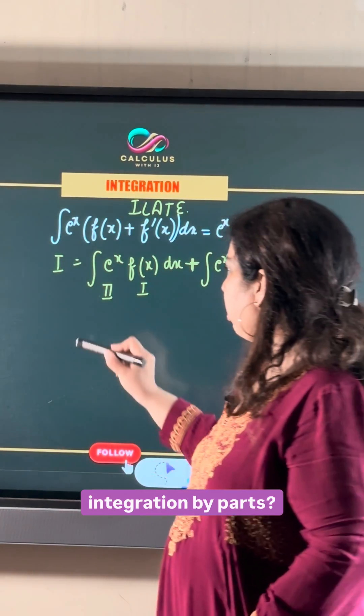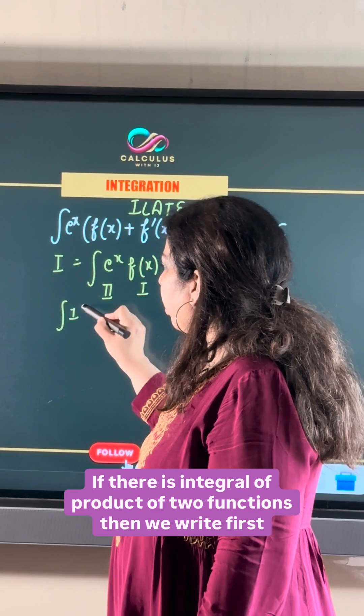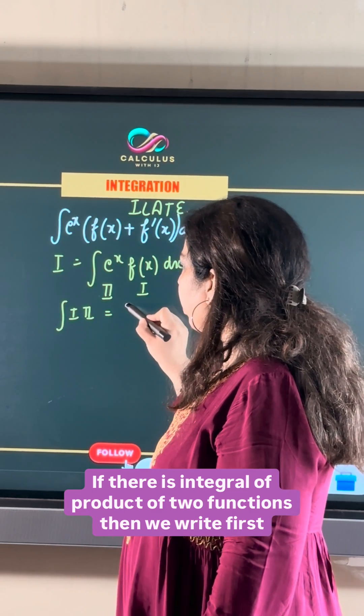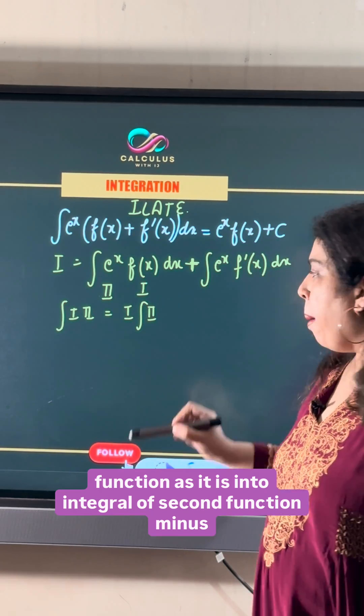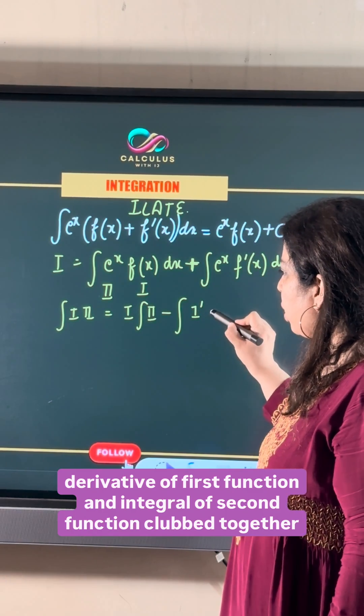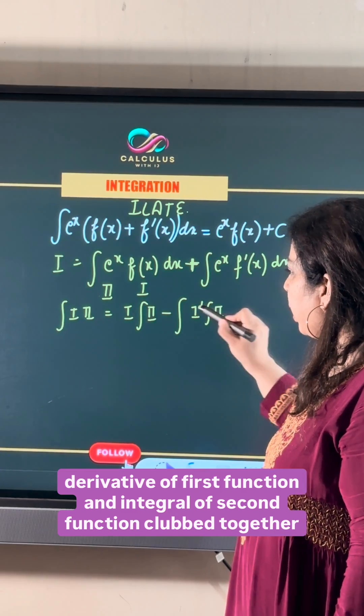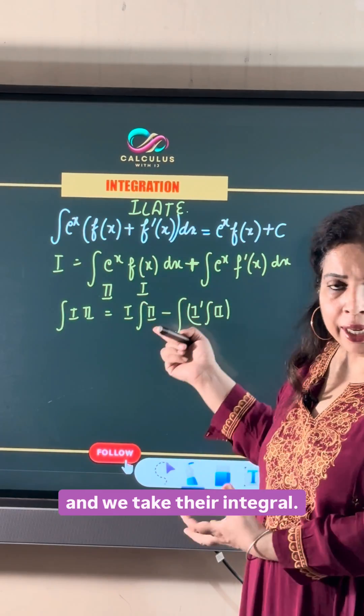And how do we apply integration by parts? If there is integral of product of two functions then we write first function as it is into integral of second function minus derivative of first function and integral of second function club together and we take the integral.